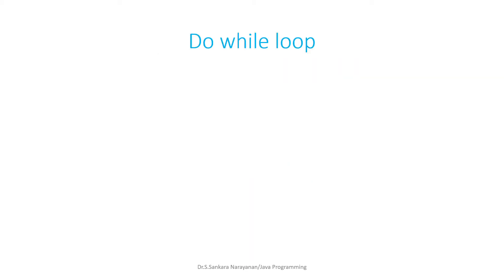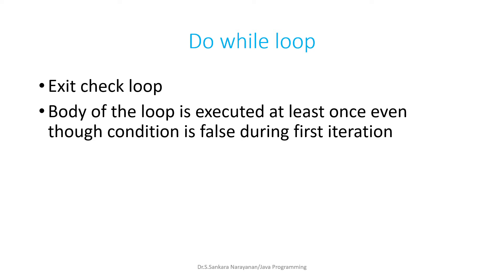The do-while is actually an exit check loop, compared to the while loop which is an entry check loop. In do-while, the body of the loop is executed at least once, even though the condition is false during the first iteration.